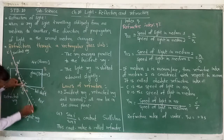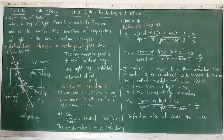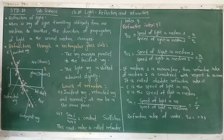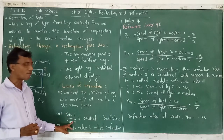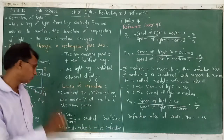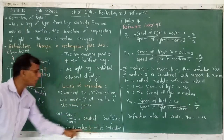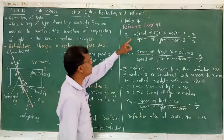The laws of refraction state that the incident ray, refracted ray, and emergent ray all lie in the same plane. The ratio of the sine of the angle of incidence to the sine of the angle of refraction is constant. This law is known as Snell's law. Mathematically: sine(i) / sine(r) = constant. This constant value is known as the refractive index, denoted by eta (η).